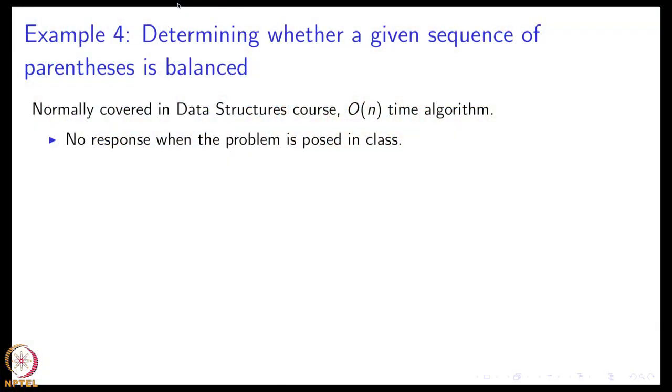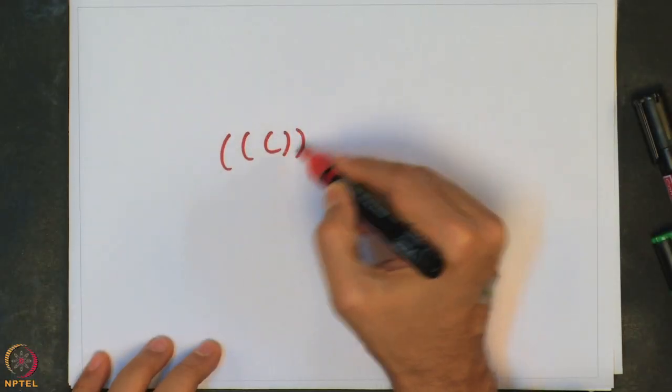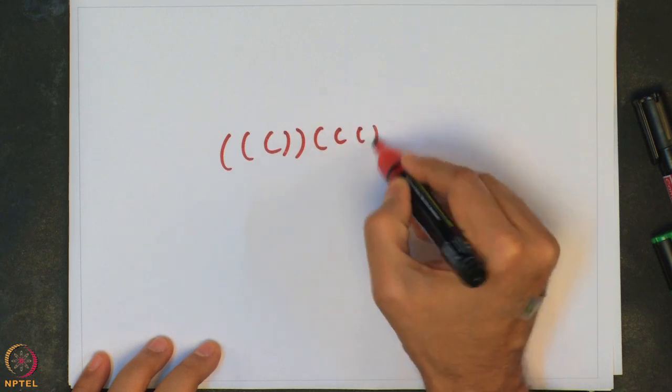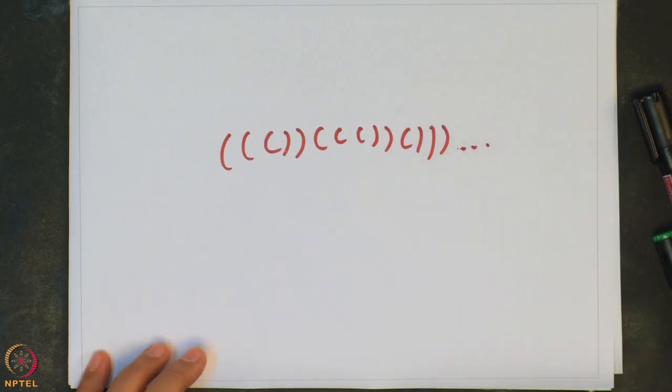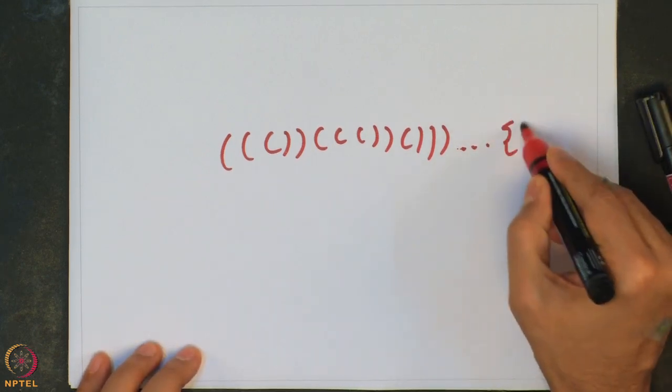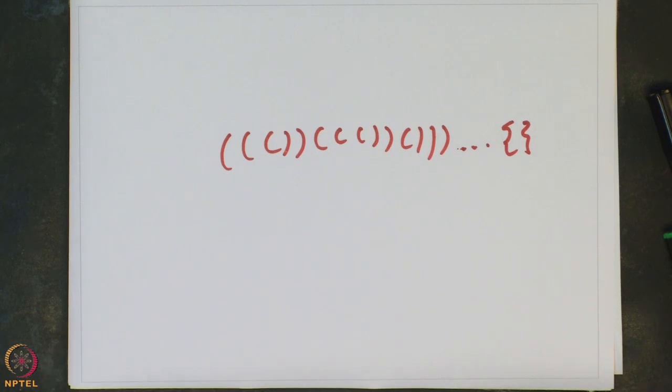When I pose the problem in class, I usually do not get a quick response. So I went to the board and said look, I am going to give you something like this, a sequence of parenthesis. Maybe they could include braces and brackets, whatever it is. And you have to write a program to tell me whether this is balanced or not.